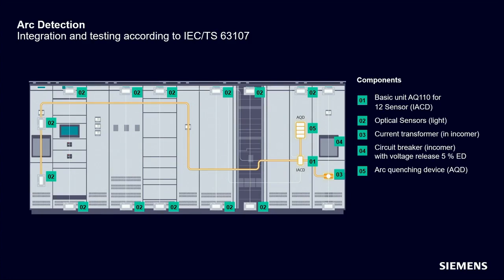Such a system usually consists of a detection relay, light sensors, current transformers, a circuit breaker, and an optional quenching device. The light sensors are installed in different areas of the switchboard and monitor for light emission from an arc fault. If a light event is detected, a signal is sent to the detection relay, which sends a trip signal to the circuit breaker of the incoming feeder. To avoid false triggering by other bright events, the sensors are precisely matched to the spectrum of an arc fault, and current transformers provide an additional triggering criterion — a steep rise in current must also be detected before the trip signal is sent.